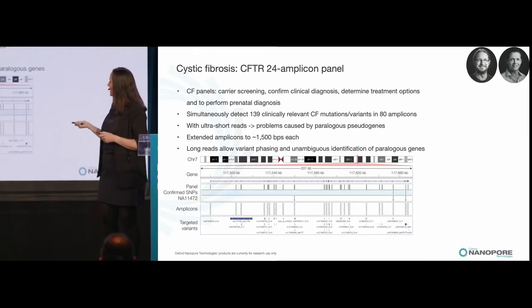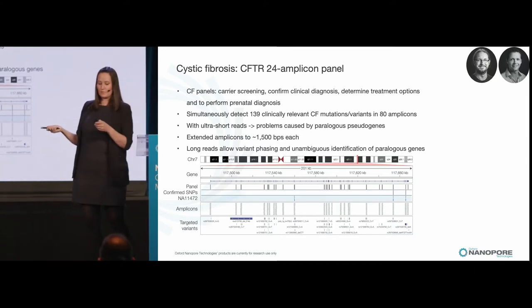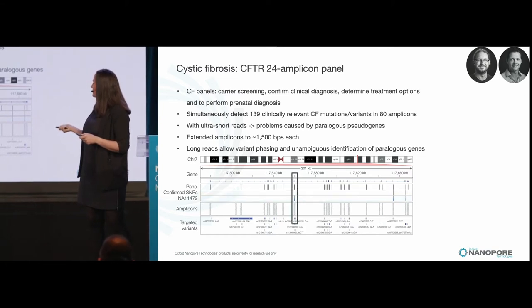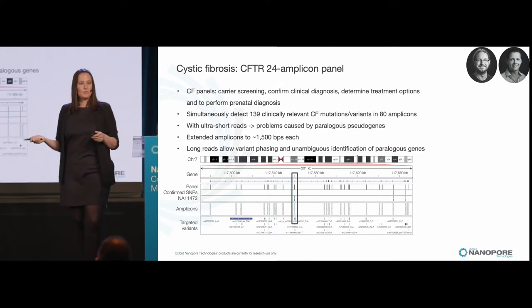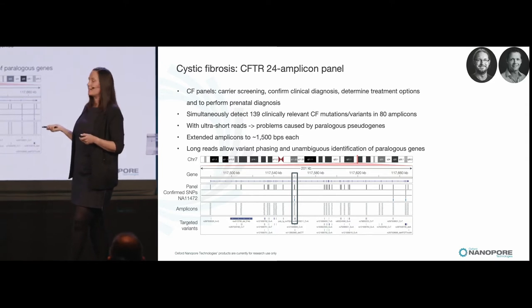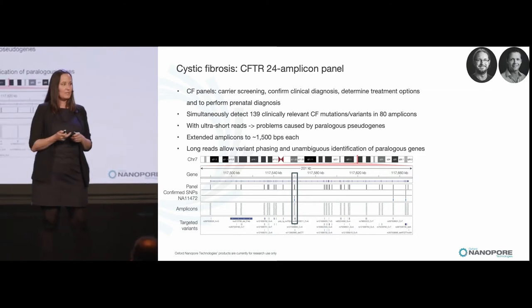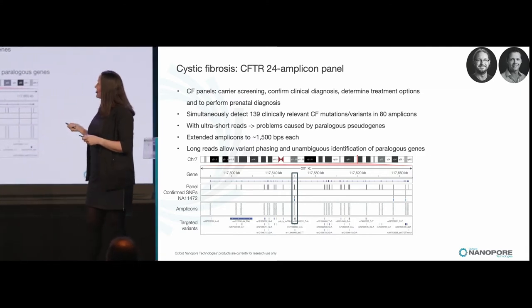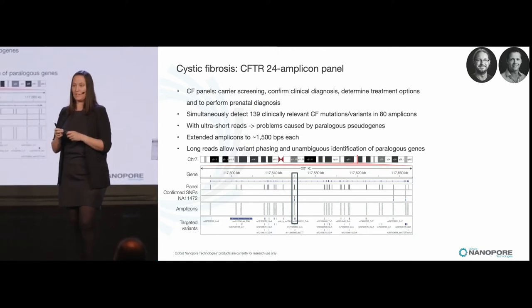This is the type of result you get when you map it back. Down here you have all the amplicons; up here you have the gene. This is the ultra-short read panel from literature, and these are the two confirmed SNPs. In our results, we find these two SNPs — they're heterozygous and we find them very easily. We also find an extra SNP that actually lands outside of the normal primer region of the ultra-short read panel, so it's not picked up by the normal genetic test. But we pick it up, and in literature this SNP has been associated with CF, so we're quite sure it's real.